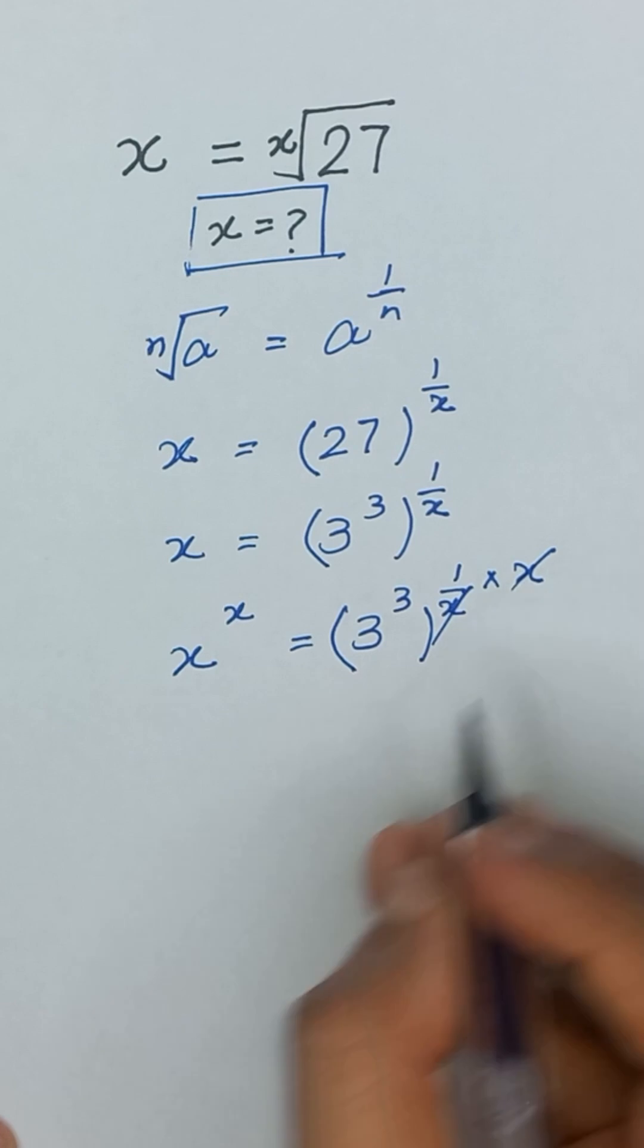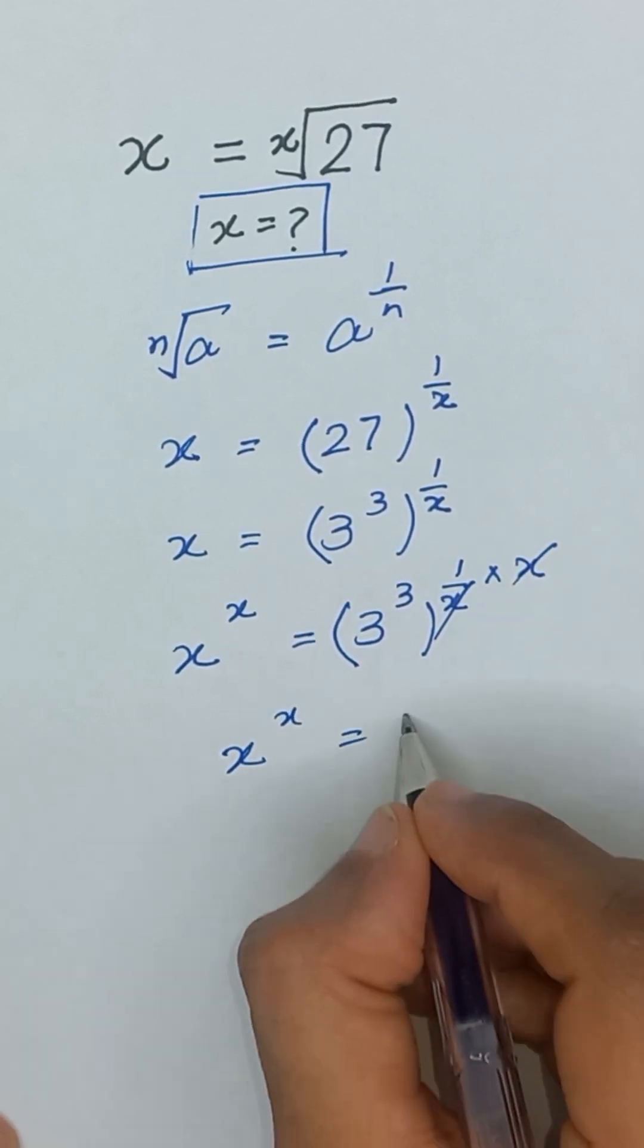So this x and x will be cancelled out and it will become x to the power x is equal to 3 to the power 3.